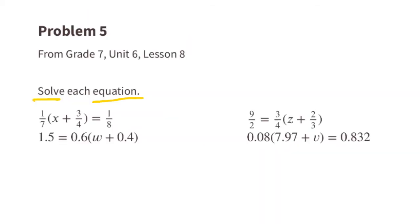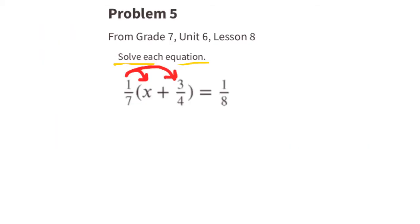Problem number 5 from 7th grade, Unit 6, Lesson 8. Solve each equation. First, we need to multiply the term on the outside of the parentheses by all the terms on the inside of the parentheses. 1/7 times X plus 1/7 times 3/4. You can rewrite this as 1/7 X plus 3/28 equals 1/8.